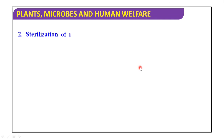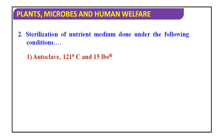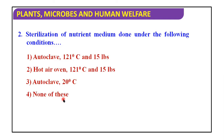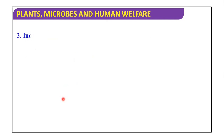Second MCQ: sterilization of nutrient medium is done under which conditions? Options: autoclaving at 121 degrees centigrade and 15 LBS; hot air oven at 121 degrees centigrade and 15 LBS; autoclave at 20 degrees centigrade; none of these. The answer is: autoclave at 121 degrees centigrade and 15 LBS pressure.